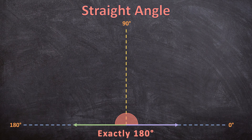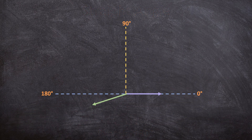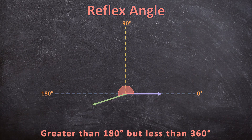I'm going to make the framework a bit smaller so our ray can rotate even further. What if our angle is bigger than 180 degrees? This is called a reflex angle. A reflex angle is bigger than 180 degrees but smaller than 360 degrees. This will also be a reflex angle.